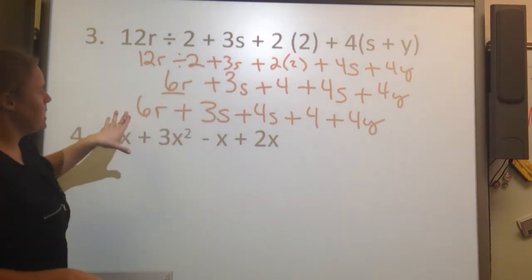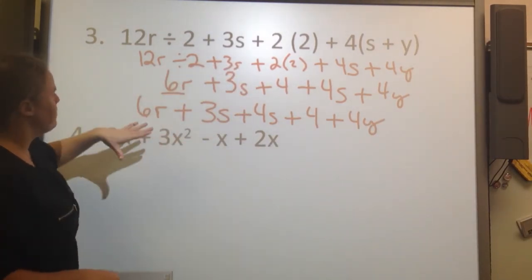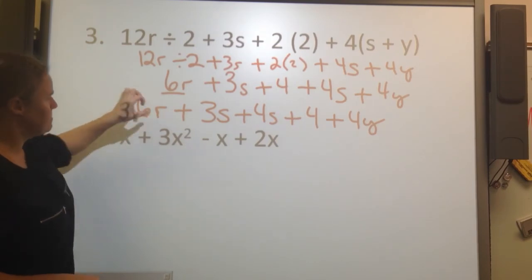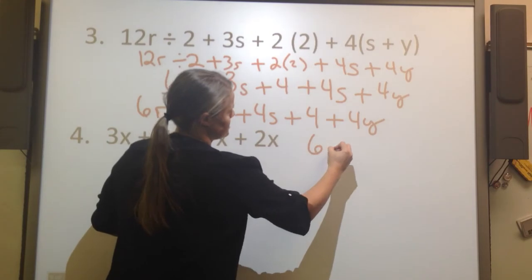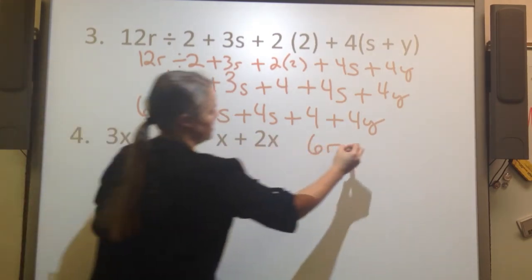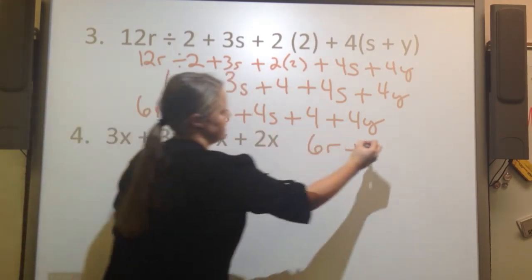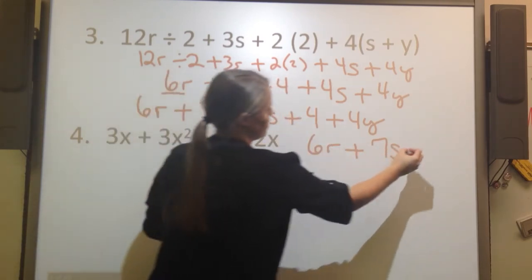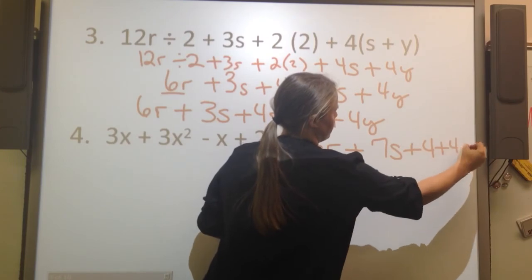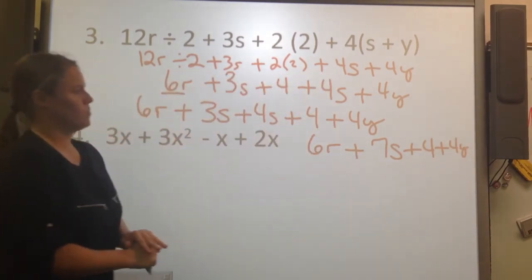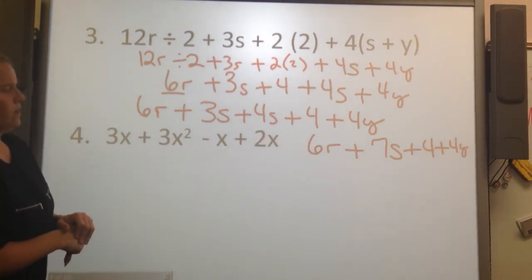And so now I can, I'm running out of room, but I can combine my 3s and 4s. So I'm going to rewrite again. So 6r, because there's nothing to add it to, plus 7s, plus 4, plus 4y. And we'll be good to go with that as it is.